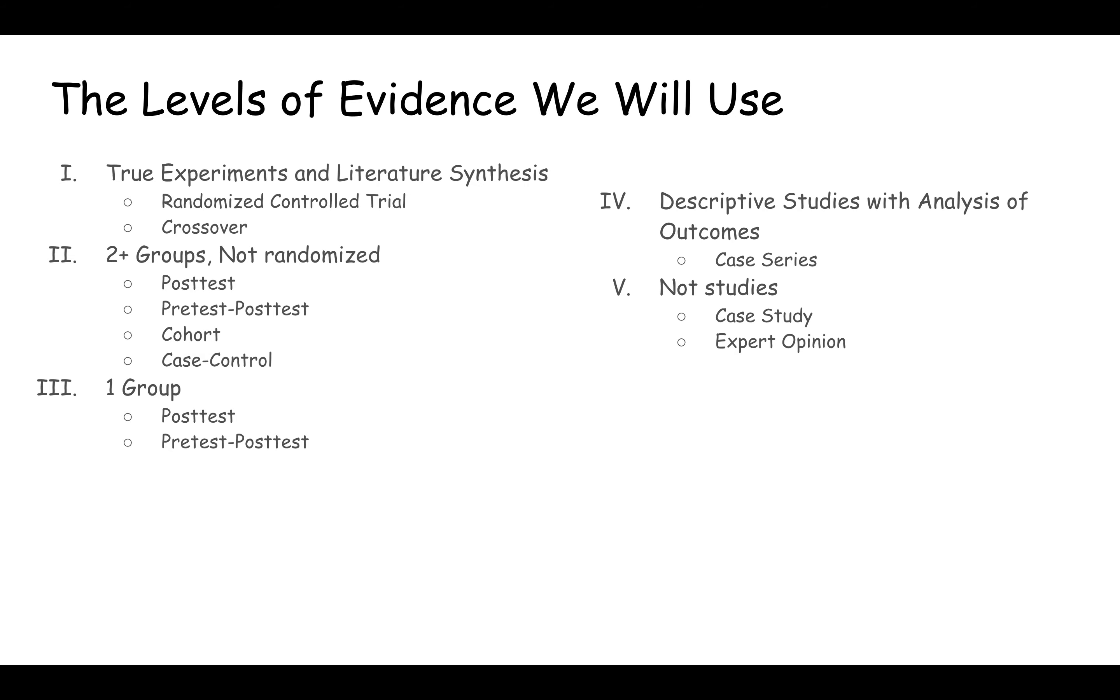This is the levels of evidence we are going to use in this class. It's based on the AOTA levels of evidence. So level one are true experiments and literature synthesis and we'll explain what those are later in the semester.